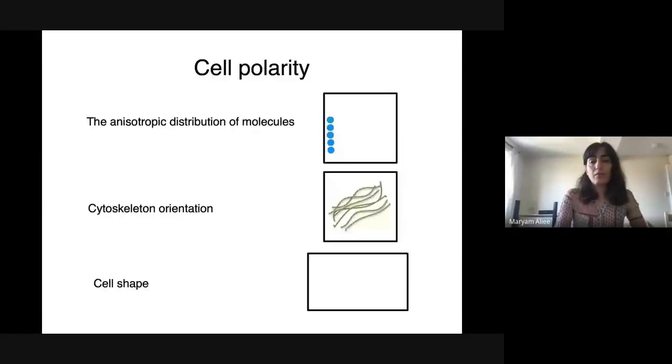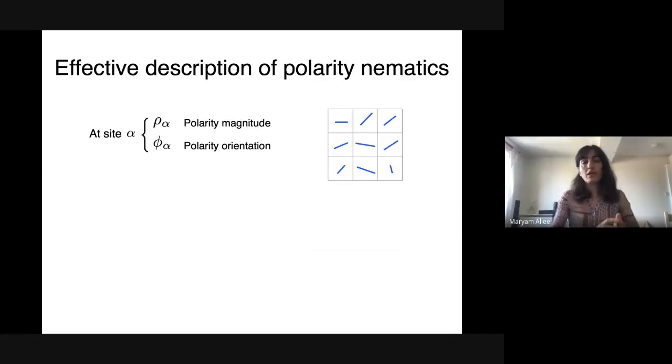It's interesting to know how cells collectively organize to form such patterns. Let me first simplify the system. Polarity can be an anisotropic distribution of molecules at one part of the cell, the orientation of cytoskeleton filaments, or cell shape. This talk is very theoretical—we were inspired by patterns seen in plant tissues but didn't apply the model to the system because of other complexities.